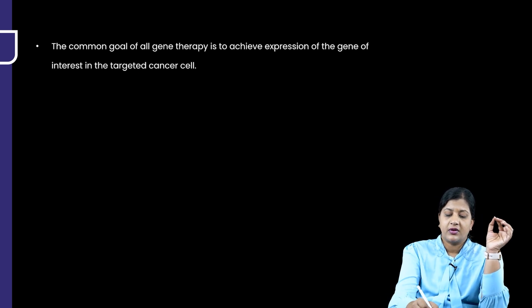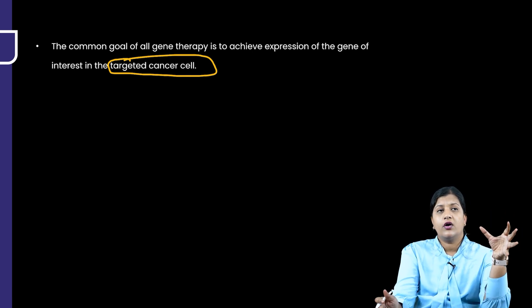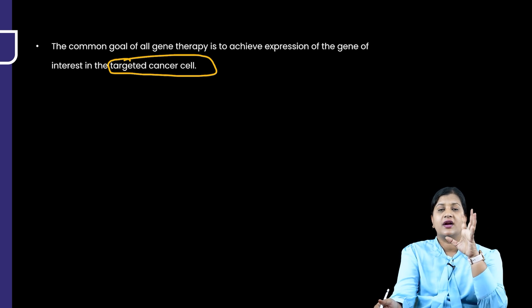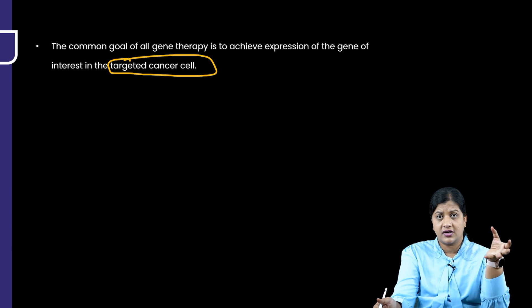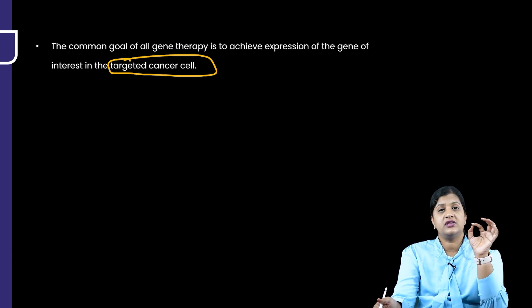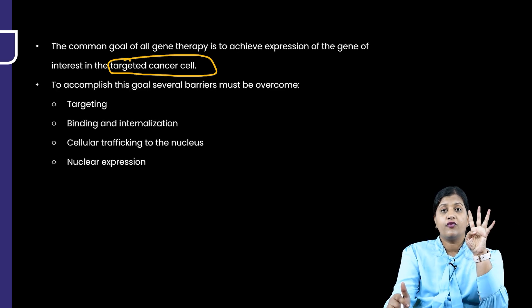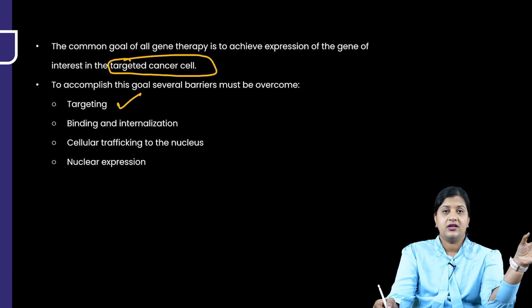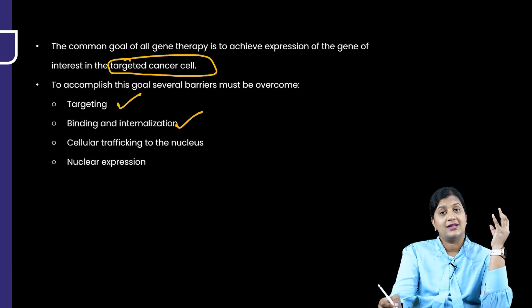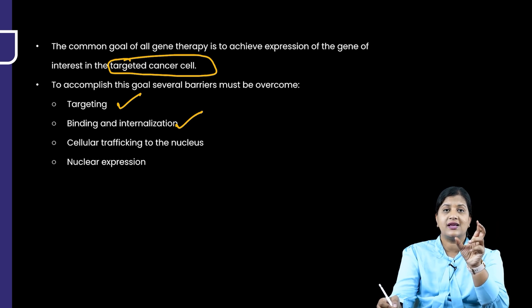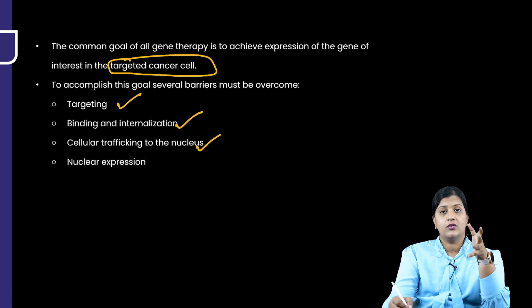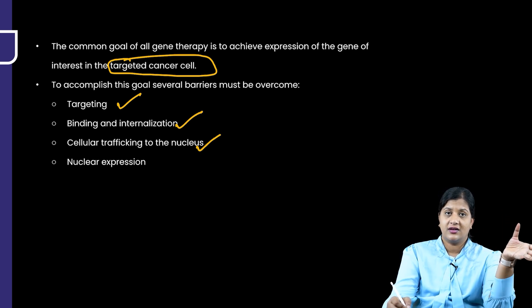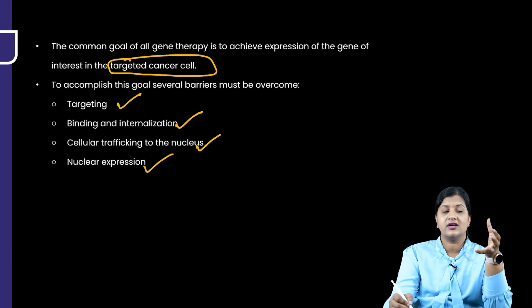The common goal of gene therapy is to achieve expression in the targeted cancer cell — either reducing its expression or delivering destruction factors. To reach the targeted cancer cell, four barriers must be overcome: first, targeting, which ensures the correct gene therapy goes to the correct cell; second, binding and internalization, so the virus carrying the gene can bind to and enter the cell; third, cellular trafficking to the nucleus, avoiding phagosomes and lysosomes that would destroy the genetic material; and fourth, the material must reach the nucleus and be expressed.